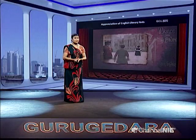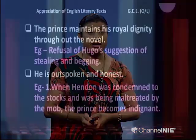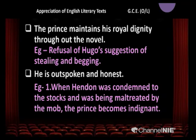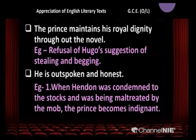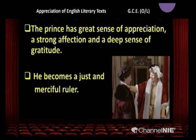The prince maintains his royal dignity throughout the novel. For example, his refusal of Hugo's suggestion of stealing and begging — he never does it. He is outspoken and honest. For example, when Hendon was condemned to the stocks and was being maltreated by the mob, the prince became indignant and shouted at the crowd. The prince has a great sense of appreciation, strong affection, and deep sense of gratitude. He becomes a just and merciful ruler — finally he appoints Tom Canty as the king's ward.